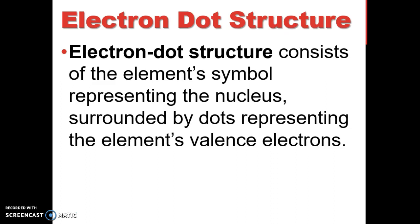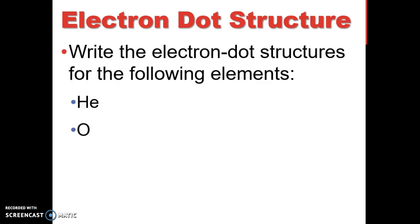Here's the definition of an electron dot structure or Lewis dot structure: it's the element symbol, which represents a nucleus, surrounded by dots representing the element's valence electrons. Here's what this looks like. If we're going to write it down, helium: you're going to put helium as the symbol. It has two electrons, so we draw two dots. Does not matter where we put the two dots, as long as we only have two dots. Oxygen will have six because it's in the sixth column, so we'll have six dots.